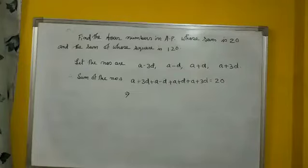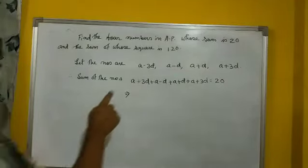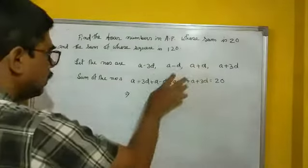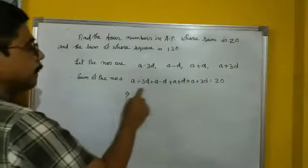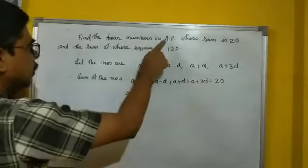Next question, now the four numbers are in AP. So let the numbers are there. Yes, according to that rule, we take the sum is 20.